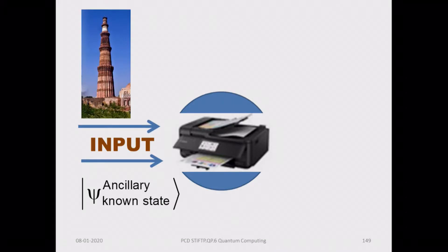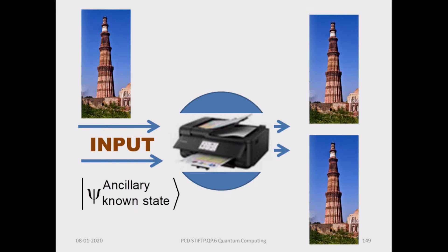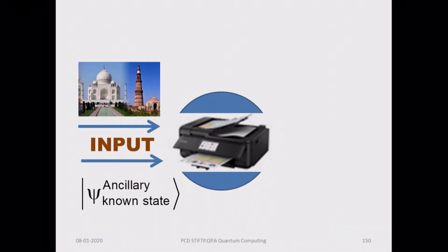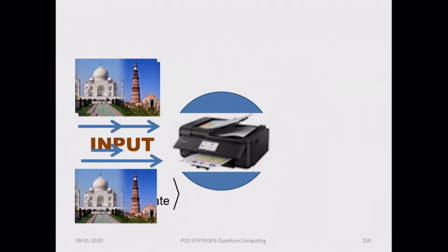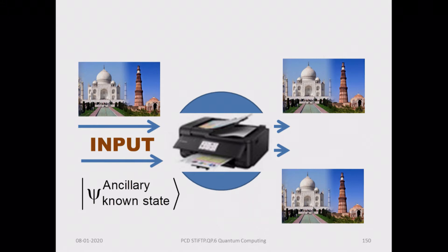It has to copy whatever you give. If you give the Qutb Minar, you will get two copies of the Qutb Minar. Or you can give a picture of the Taj Mahal with the Qutb Minar, and you expect it to produce two copies of that.